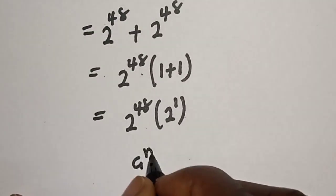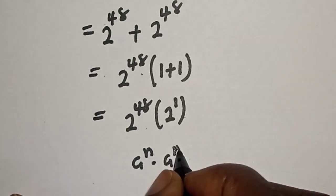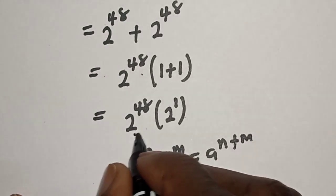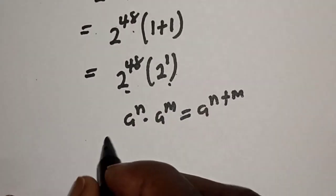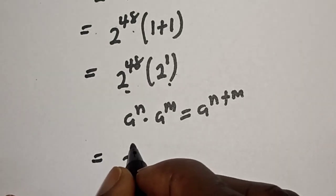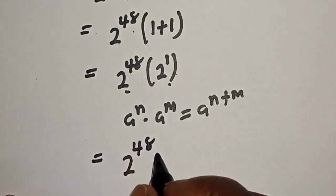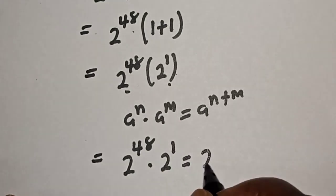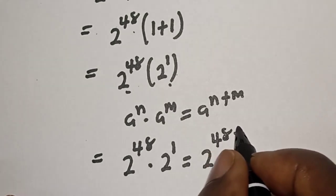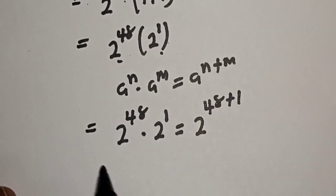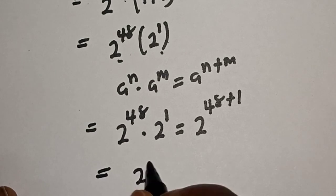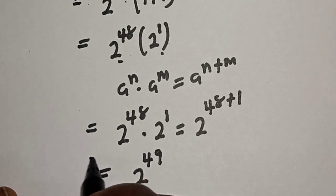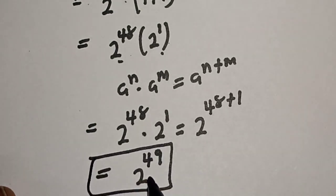Take note of this rule: a raised to power n multiplied by a raised to power m equals a raised to power n plus m, because of the same base. So 2 raised to power 48 multiplied by 2 raised to power 1 equals 2 raised to power 48 plus 1, which is 2 raised to power 49. This is the final answer.